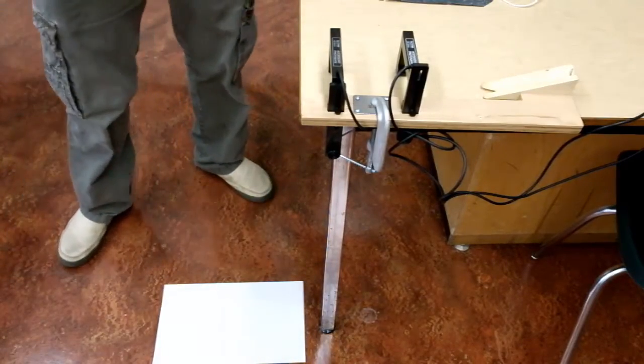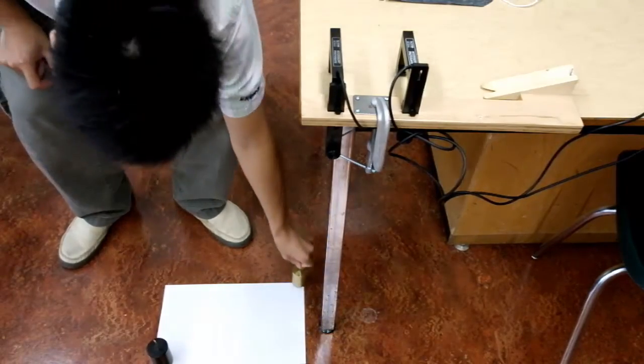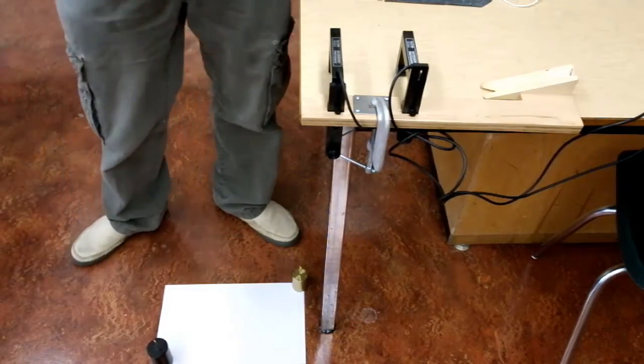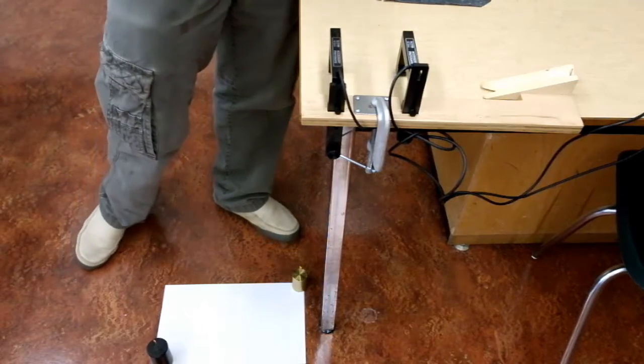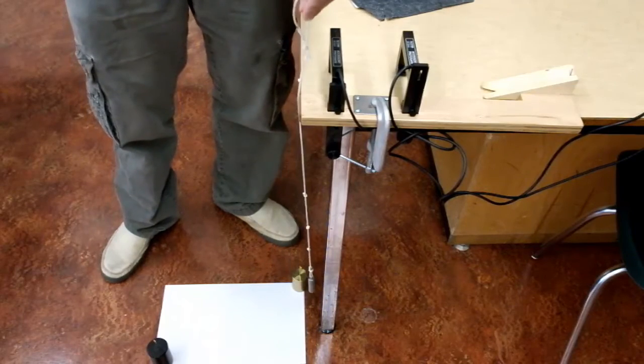So that, now that we're happy with it, we use some weights to weight down the paper so that it doesn't slide around and back to our measurement. And we'll take a plumb ball to mark out where the beginning of the fall is.